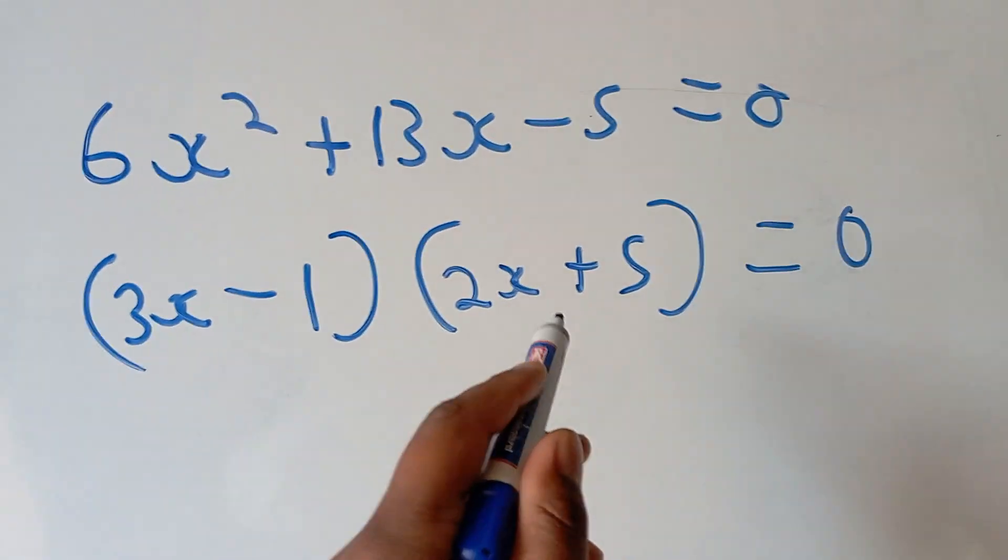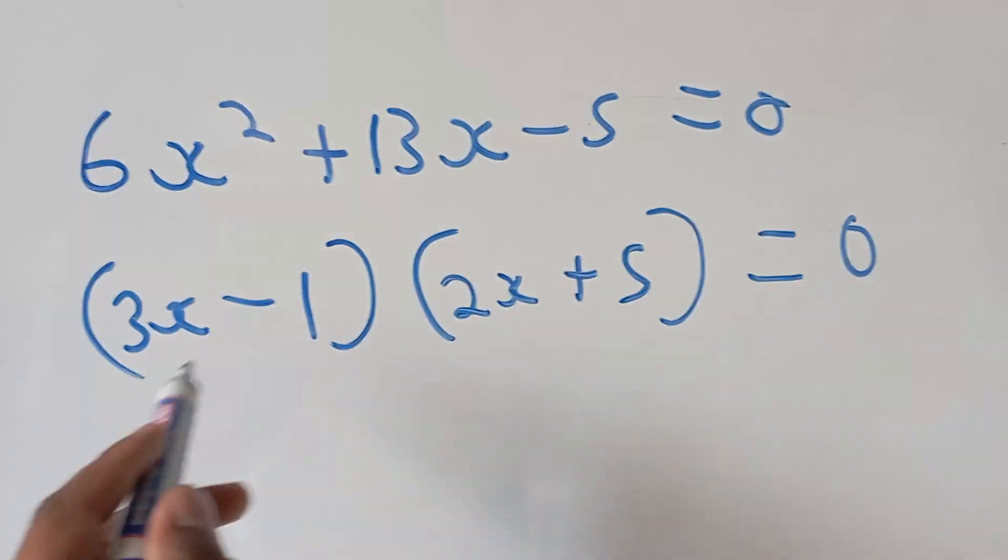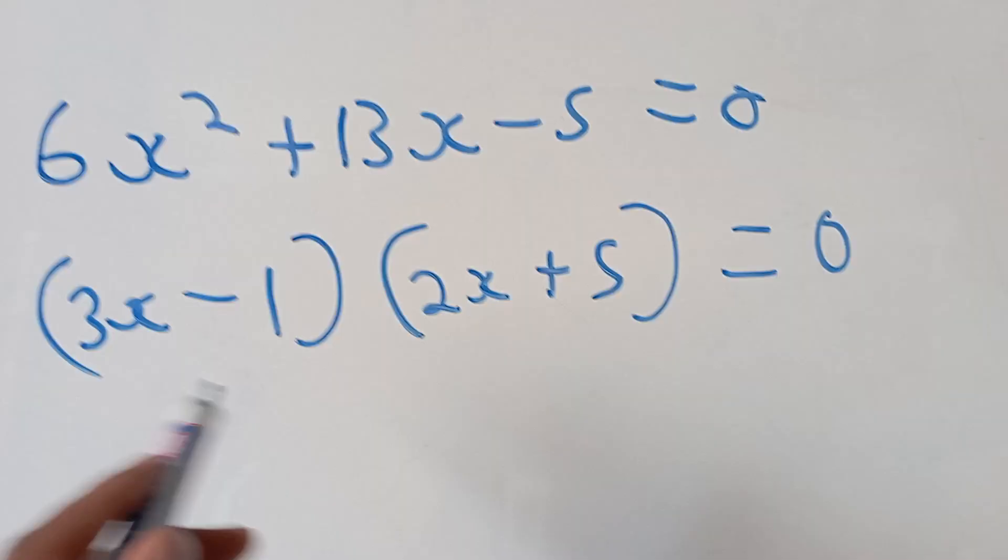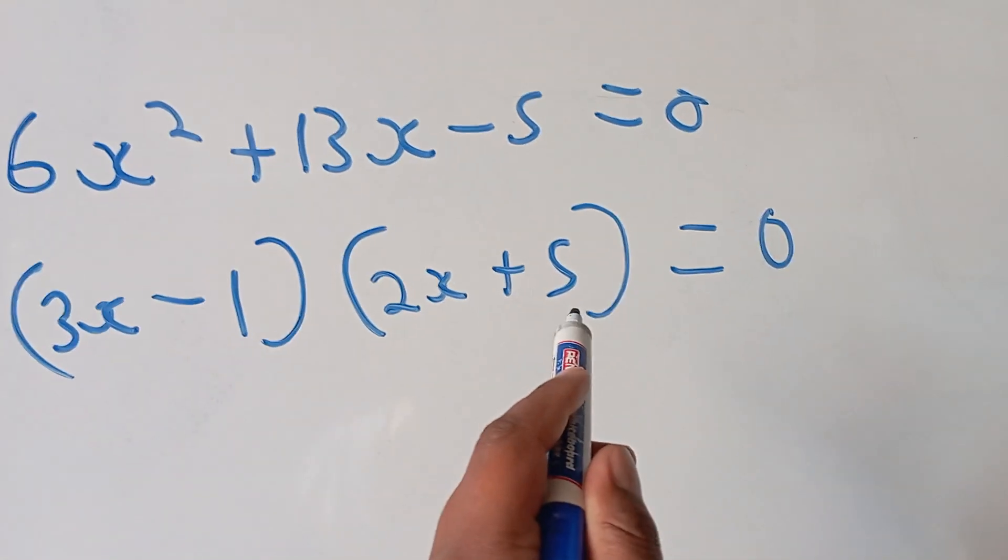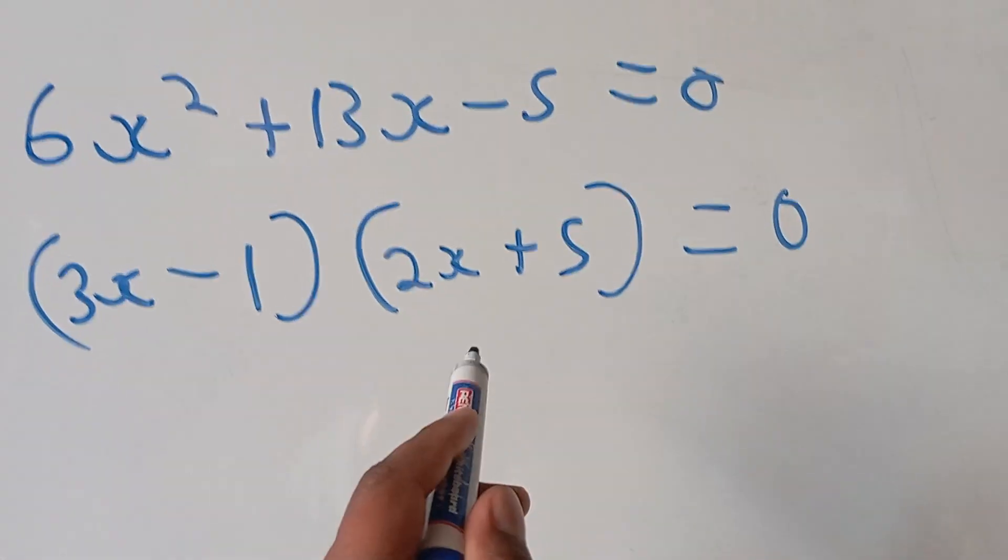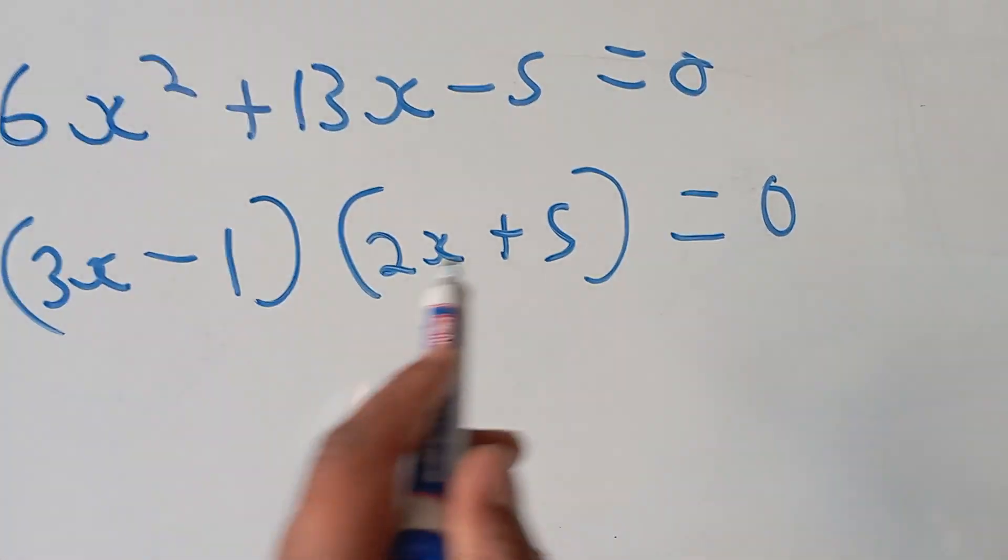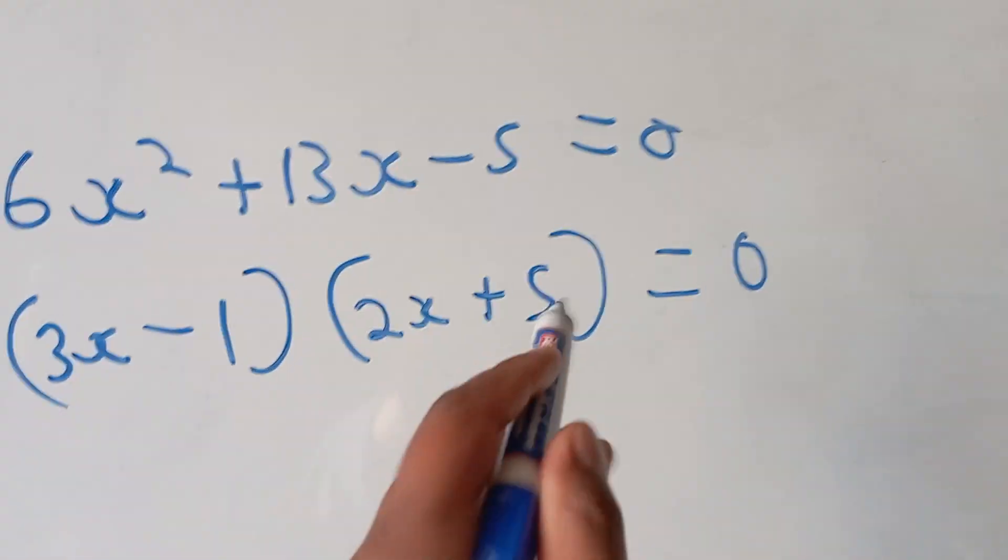Then, if you multiply this, 3x times 2x is going to give you 6x squared. 3x times 5 is going to give you 15x minus 2x is going to be 13x. Then this times this is going to give you minus 5.